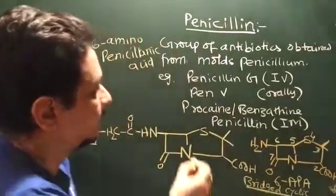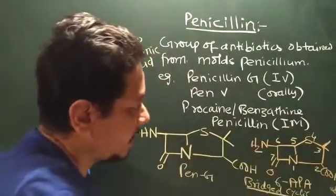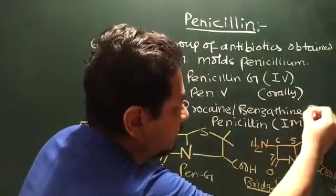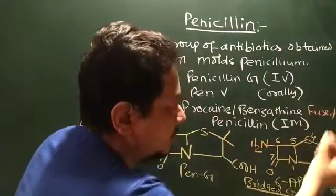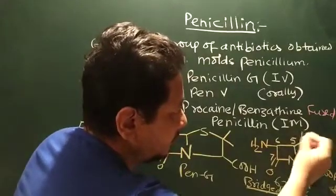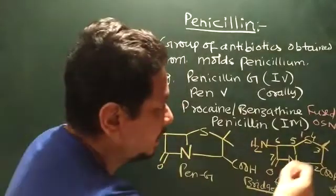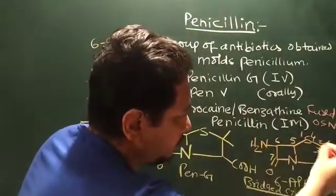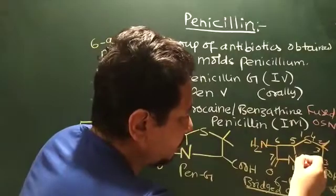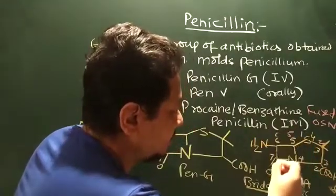But over here, I am giving a numbering as per the fused ring. So fused ring, we start with sulfur, because in fused ring, the numbering is OSN. So sulfur 1, then I have 2, then 3, then 4, then remaining 5, 6, 7 is same.